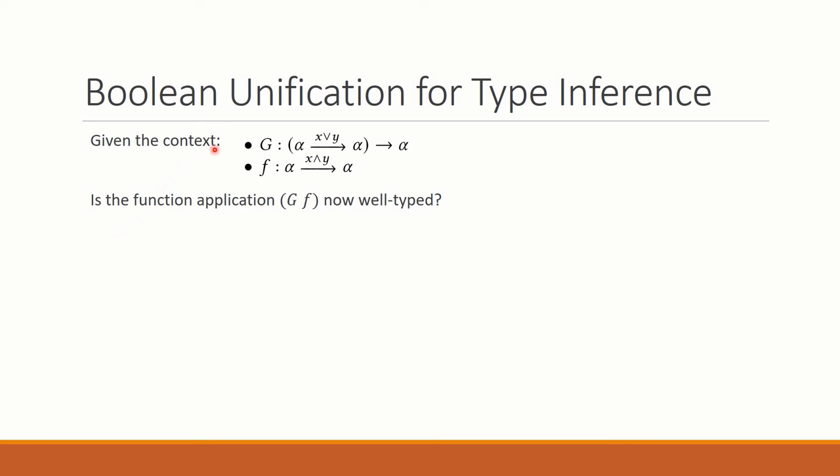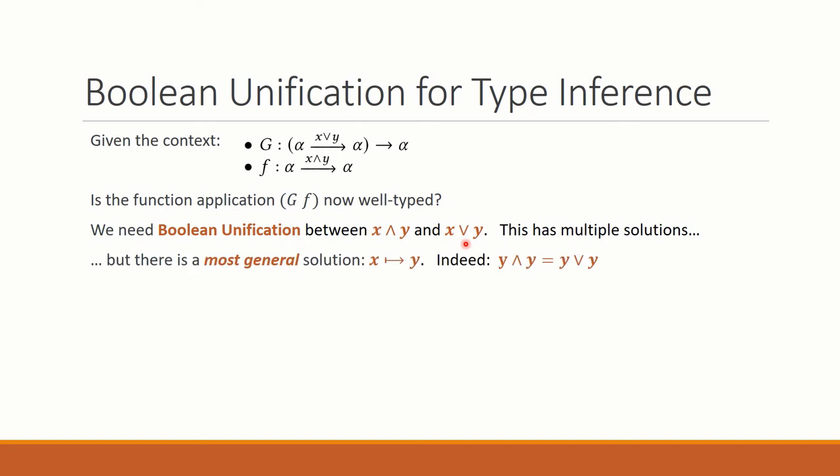Let me illustrate this with this example. We want to apply this higher-order function g to the argument f. Well, there is a small problem. f has effect x and y, and g expects something with effect x or y. This is only well typed if x and y and x or y can be unified. There are multiple solutions. x and y equals false is a solution of this equation. But x and y equals true is also a solution of this equation. But there is a most general one. We can just map x to y, and on the left and right we get y and y equals y or y, and those terms are equivalent indeed in the Booleans.